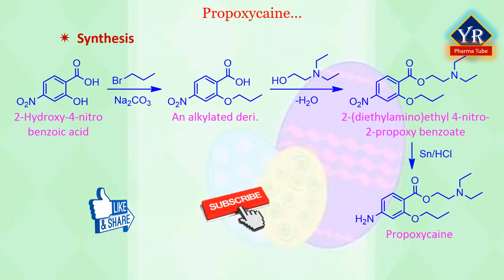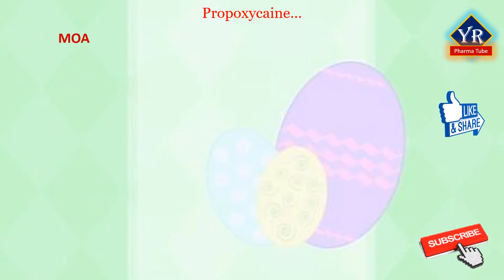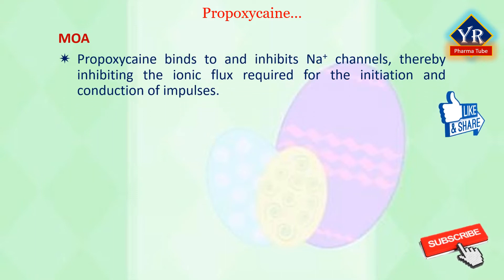Propoxicaine is synthesized from 2-hydroxy-4-nitrobenzoic acid, which is alkylated with N-propylbromide. The alkylated derivative is then treated with 2-diethylamino-ethanol to form 2-diethylamino-ethyl-4-nitro-2-propoxybenzoate. This is then reduced with tin in the presence of hydrogen chloride to give the desired product, propoxicaine. Propoxicaine's mechanism of action is similar to that of other local anesthetics. It binds to and inhibits voltage-gated sodium channels, thereby inhibiting the ionic flux required for the initiation and conduction of impulses. This results in loss of sensation.